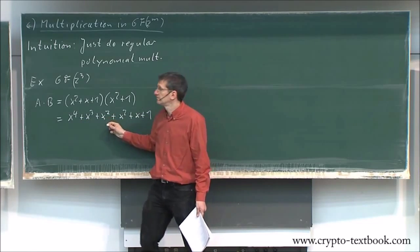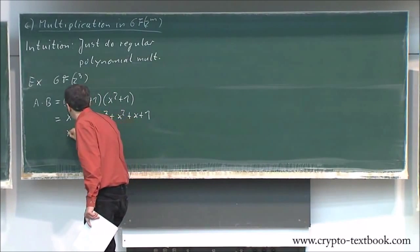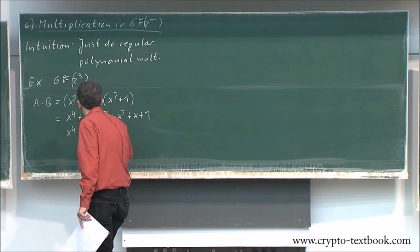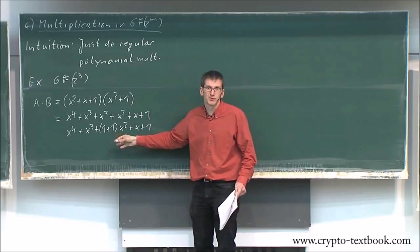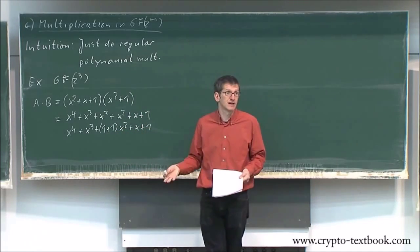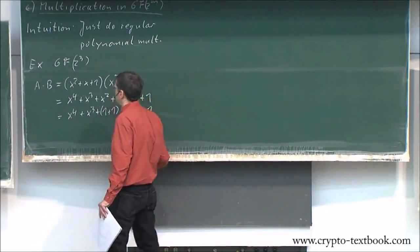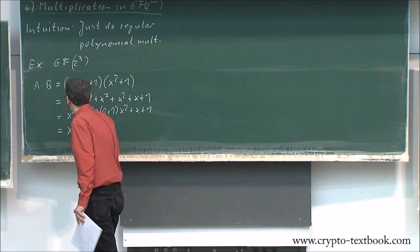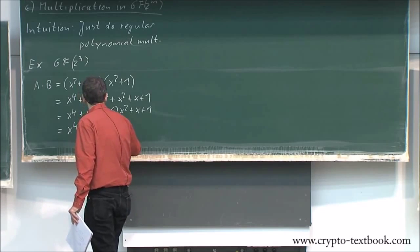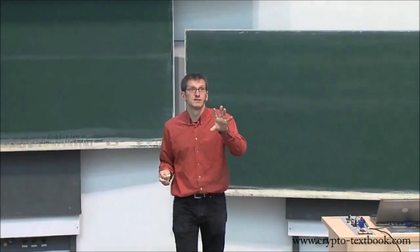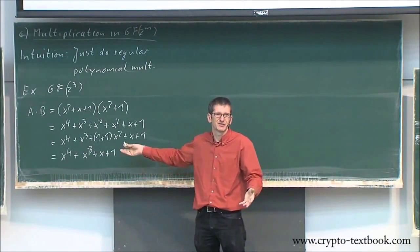Plus x squared plus x plus one. Now it gets a little complicated — x to the fourth is okay, x cubed is okay. What happens with x squared plus x squared? That's zero. And one plus one is zero mod 2. So we can simplify. This is seventh grade math — it's not complicated.